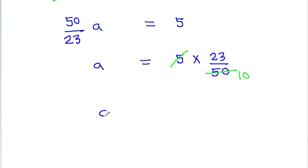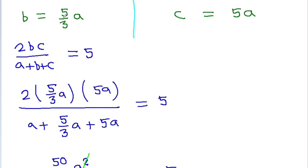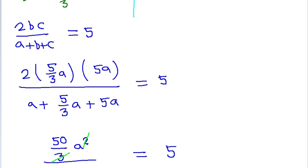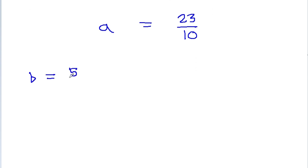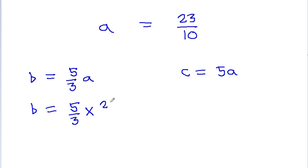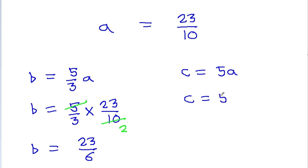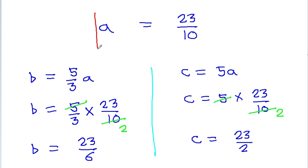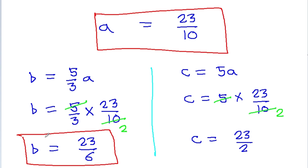We get a is equal to 23 by 10. Now with b equal to 5 by 3 times a and c equal to 5 times a: b will be 5 by 3 into 23 by 10, and 5 times 2 is 10, so b is equal to 23 by 6. And c will be 5 times 23 by 10, so c is equal to 23 by 2. Therefore, the value of a is 23 by 10, b is 23 by 6, and c is 23 by 2.